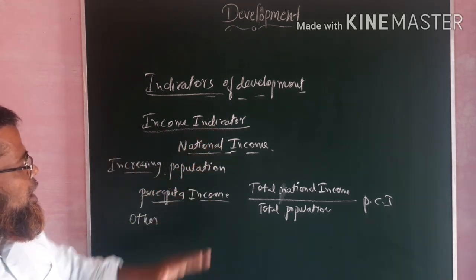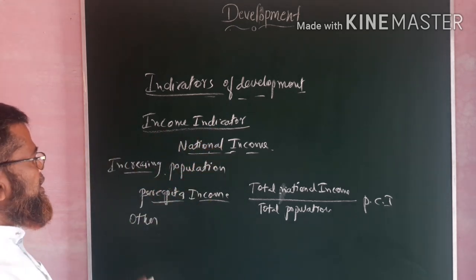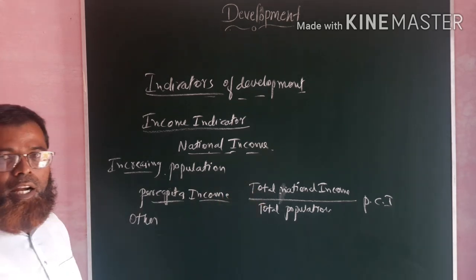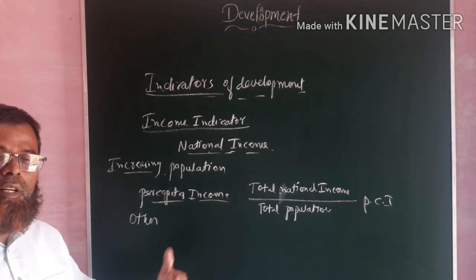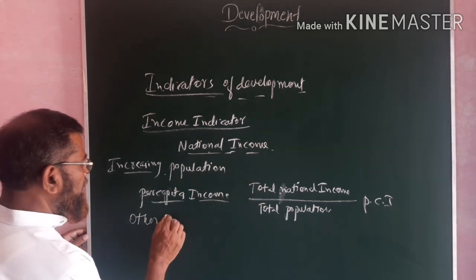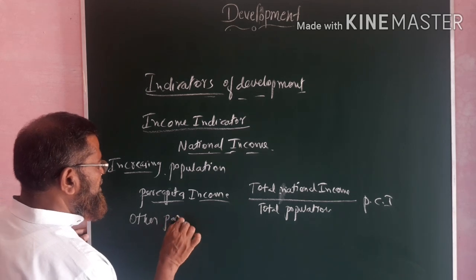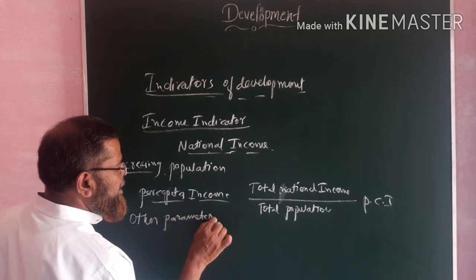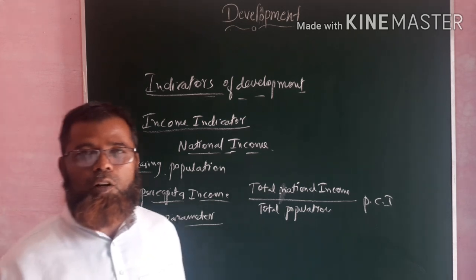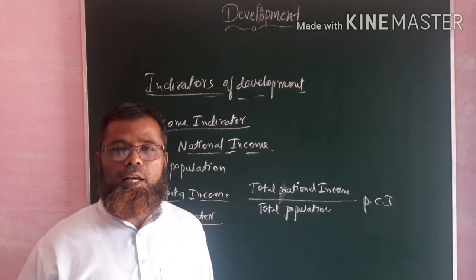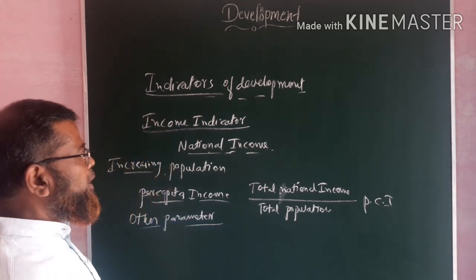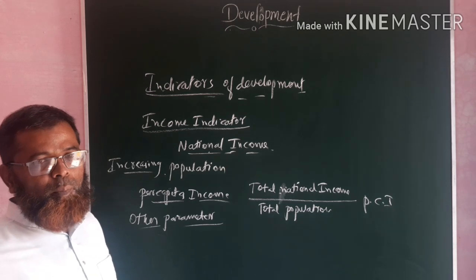National income and per capita income are indicators, but a real figure of development cannot be obtained from them. That's why other parameters are adopted to measure national or economic development of a country. This is called the Human Development Index.